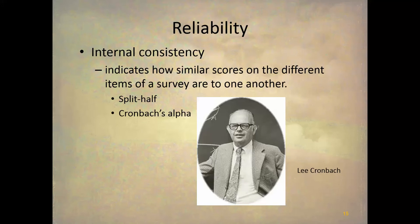Another way of measuring reliability is internal consistency. As the name implies, this is internal to one test. We measure it internally because we don't want to give two tests over a certain time period — it's impractical, or something about the trait or the test makes it difficult. For example, people may respond to the test the first time and that may change how they respond the second time — like a testing threat in internal validity. When you have situations like that and can't use test-retest, you look at internal consistency, which examines how similar the scores of different items are to each other.